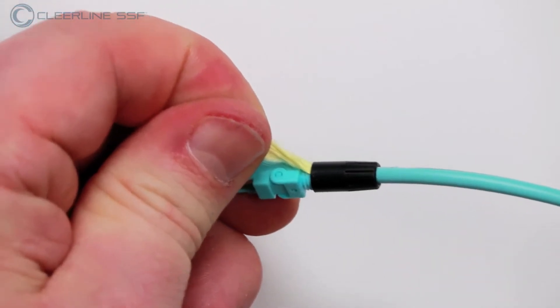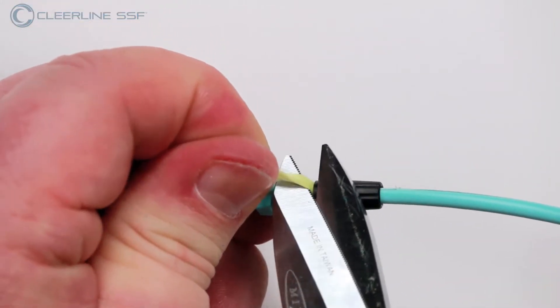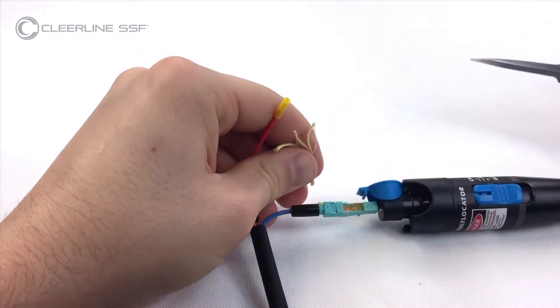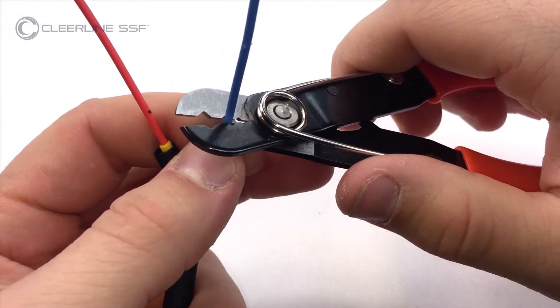Aramid Strand Shears. Use these shears to easily trim the aramid yarns present as strength members in all Clearline cables. Tri-Hole Fiber Strippers.